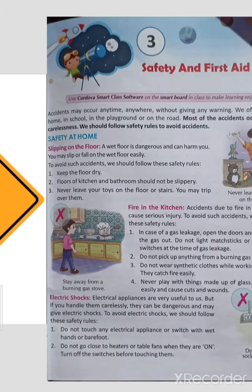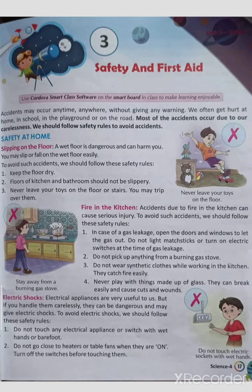As you all know, accidents may occur anytime, anywhere without giving any warning. Accidents कहीं भी हो सकते हैं — क्या वो आपको inform करके आते हैं या warning देते हैं? No. So accidents can happen anywhere without giving any warning. We often get hurt at home,